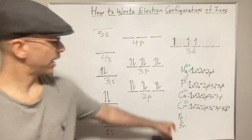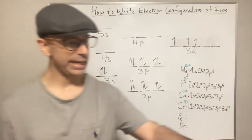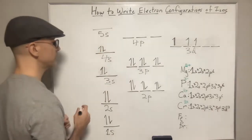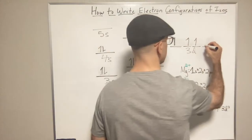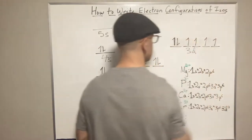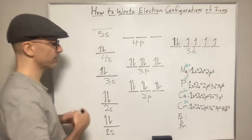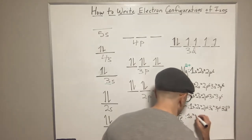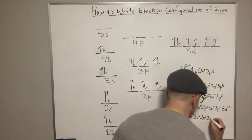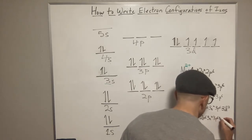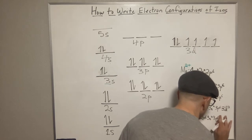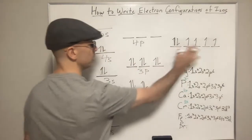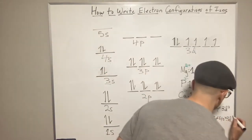What about iron? Iron is also a transition element. It is number 26. So we put in 26 electrons — we have 20, then 1, 2, 3, 4, 5, 6 in the 3D. For the neutral atom, the electron configuration would be 1S2, 2S2, 2P6, 3S2, 3P6, 4S2, 3D6.